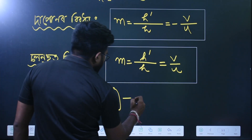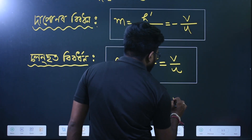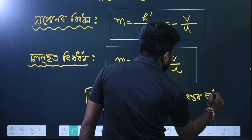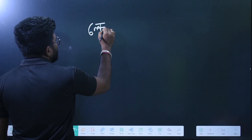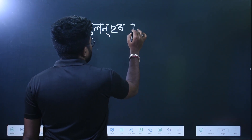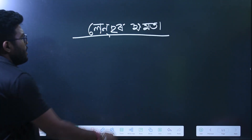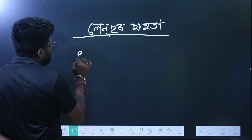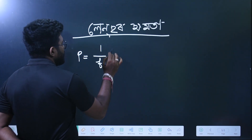This is the first thing: the second thing and the third thing. If I want to ask the question, the answer is: the lens formula — 1 by F. The lens formula gives us 1 by F.